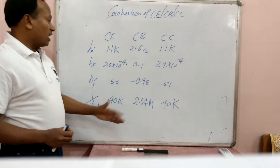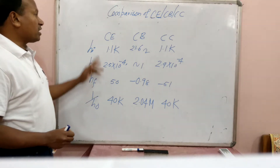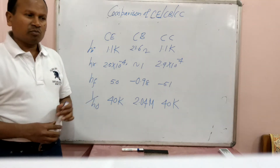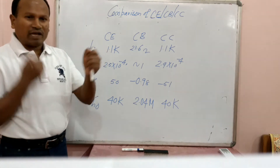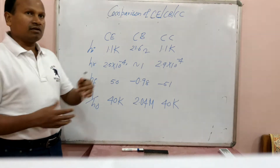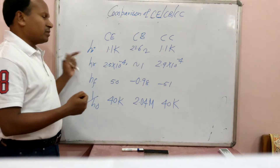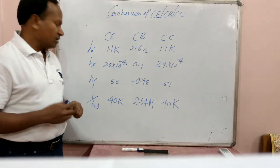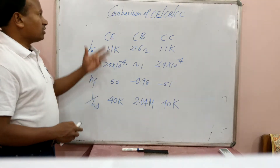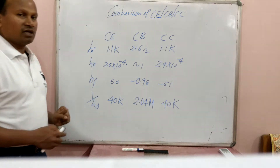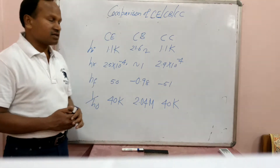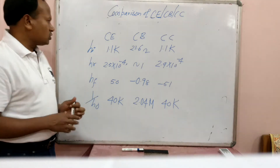You can see the comparison. I have written hybrid parameters — standard values of hybrid parameters for all three configurations. Why are we comparing on the basis of hybrid parameters? Because all these hybrid parameters are indicative values: HI is input impedance, HR is reverse voltage gain, HF is forward current gain, and HO is output admittance. All these parameters are standard parameters, normally at IC equal to 1.3 mA. You can get a summary of comparison for all three configurations based on these hybrid parameter values.